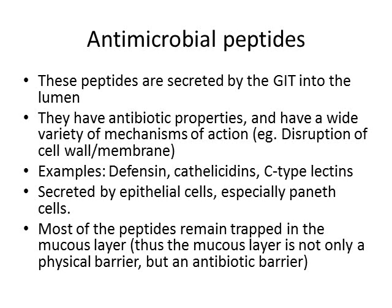Antimicrobial peptides are chains of amino acids less than 100 amino acids long — think of the peptide as a baby protein. They are secreted by the gastrointestinal tract wall into the lumen and have antibiotic properties with a wide variety of mechanisms of action, such as disrupting cell walls and cell membranes. Famous examples include defensins, cathelicidins, and C-type lectins. They are secreted especially by Paneth cells.